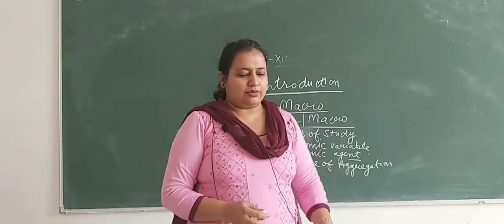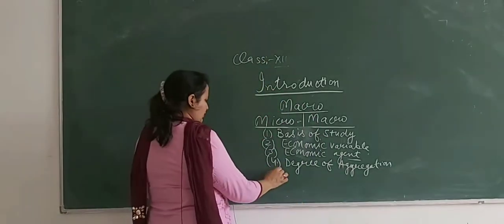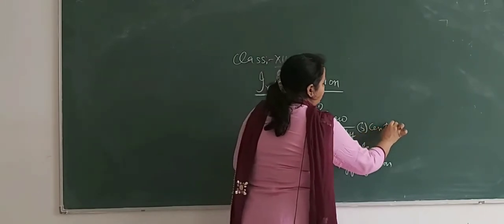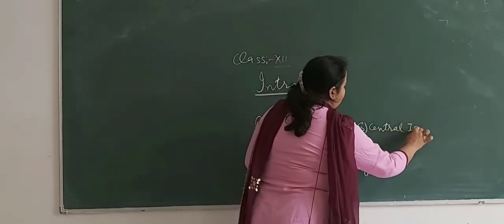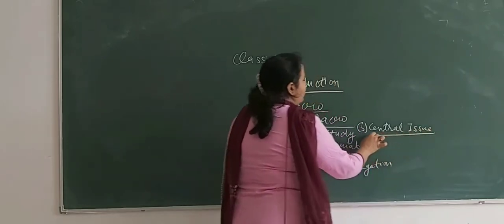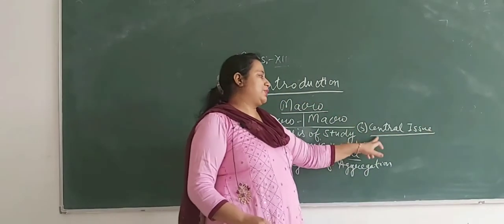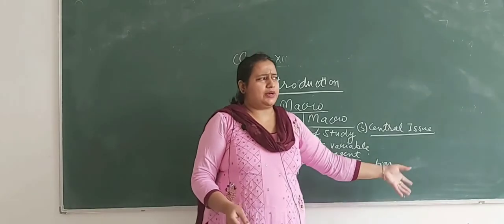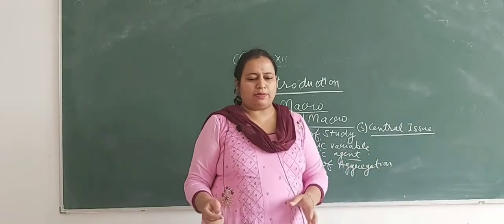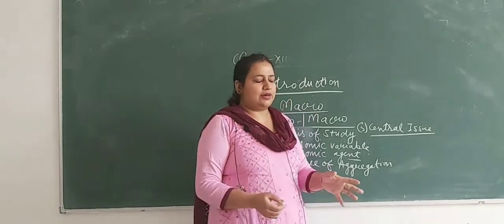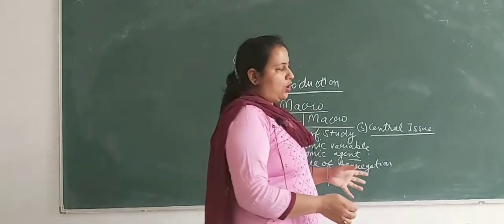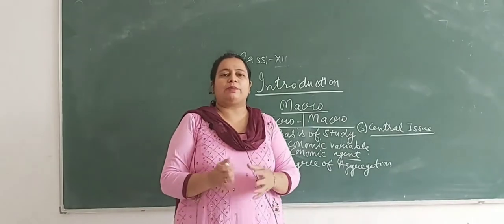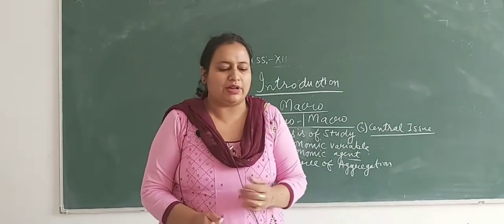The fifth point is the central issue. In microeconomics, the central issue is allocation of resources, because the consumer has to allocate its resources. In macroeconomics, the central issue is the determination of the overall level of output — meaning the total production of the country.